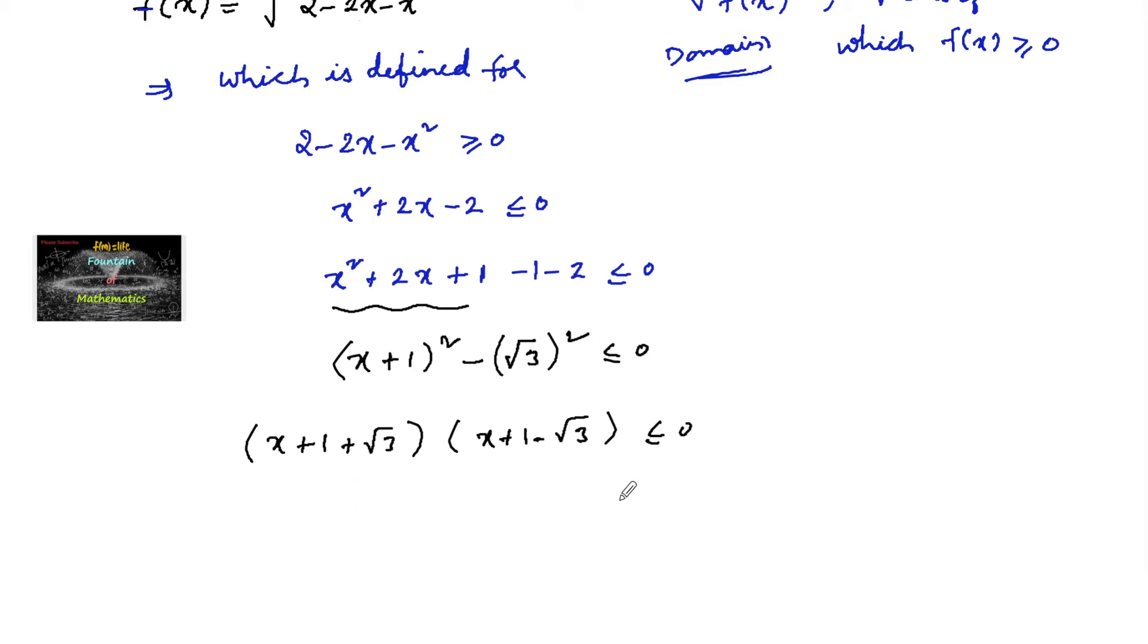So we can write it as, since we know x minus a into x minus b is less than or equals to 0, then the solution can be taken if a is lesser than b. If a is smaller than b, then the solution will be taken between a and b. That is, x lies between a and b including a and b.